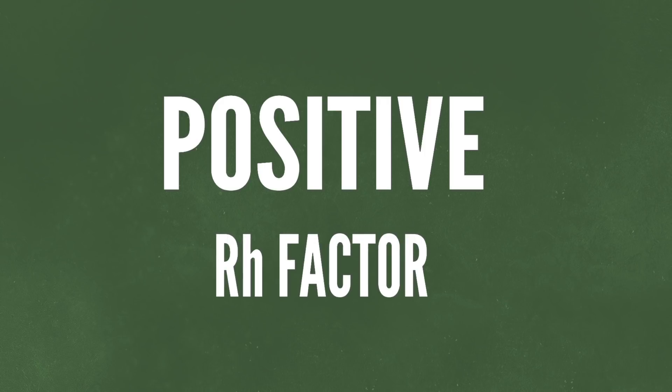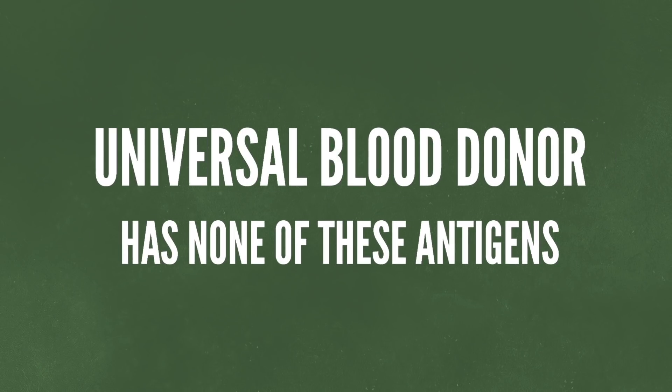Lastly, if you hear the word positive at the end of your blood type, you have an additional antigen called the RH factor. A universal blood donor has none of these antigens, which makes someone with O negative blood very valuable.